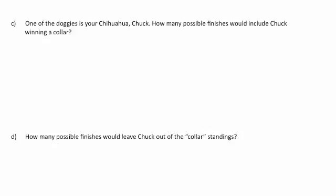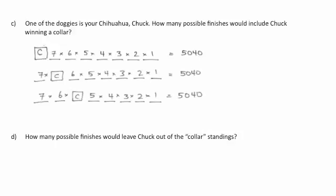One of the dogs is your Chihuahua named Chuck. How many possible finishes would include Chuck winning a medal? We need three cases. In the case where Chuck wins gold, he's fixed in that spot — the remaining 7 dogs compete for silver, bronze, and the other places, giving 7 times 6 times 5 times 4 finishes. The same number of possible finishes applies when Chuck wins silver or bronze. Since these are mutually exclusive cases — Chuck can't win silver and gold at the same time — we add them up to get 15,120 ways.